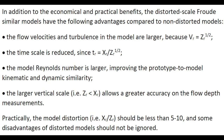In addition to the economical and practical benefits, distorted Froude similarity models have additional advantages compared to non-distorted models: the flow velocities and turbulence in the model are larger, the time scale is reduced, and the model Reynolds number is larger, improving the prototype-to-model kinematic and dynamic similarity. The larger vertical scale also allows greater accuracy for flow depth. Practically, the model distortion ratio XR over ZR should be less than 5 to 10.